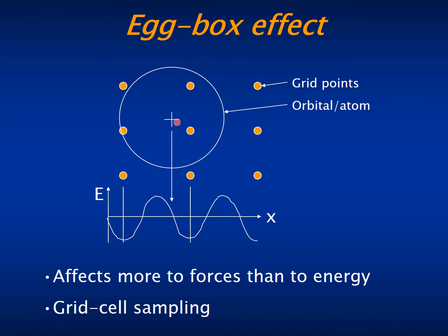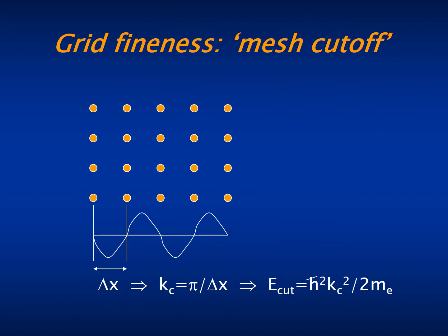To ameliorate that, SIESTA allows to perform what we call grid cell sampling by calculating the matrix elements at different positions of the atoms relative to the grid points. An important factor of accuracy in SIESTA is the fineness of the grid used.